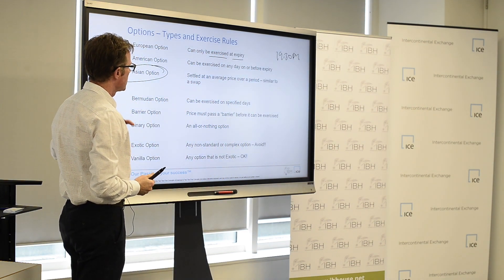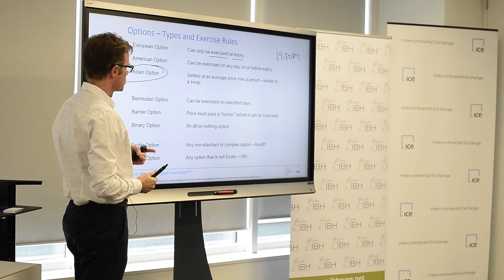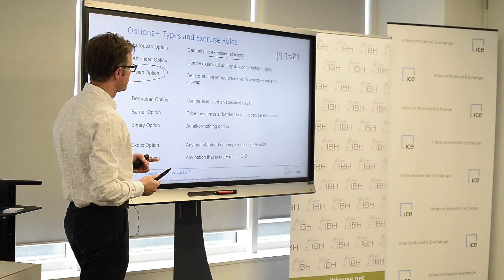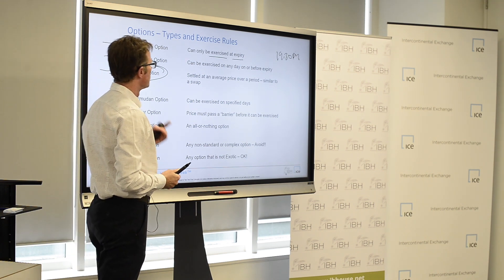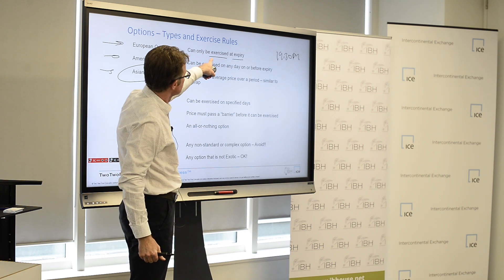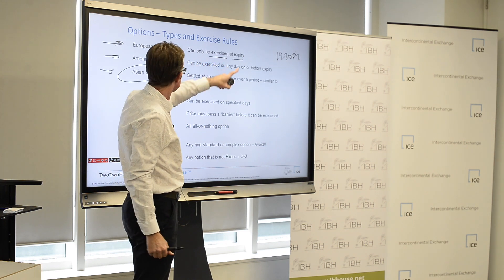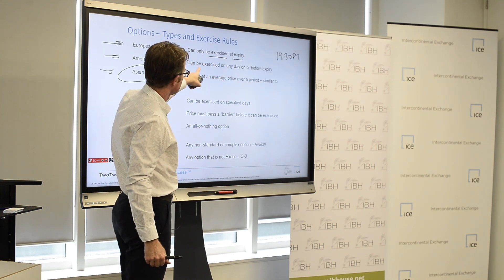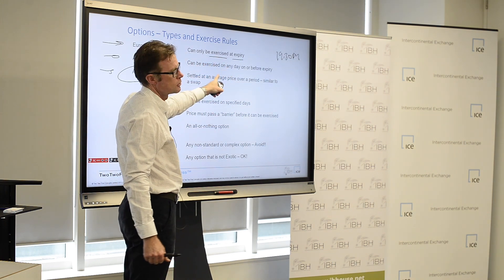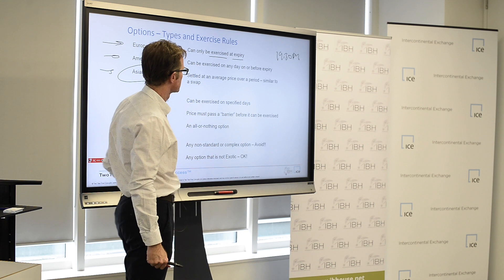With a European option, you can't choose to exercise it early. So if you decided you bought a call — that gives you the right to be long — you can't do that early. With an American option, you can do it any time up to or on expiry.